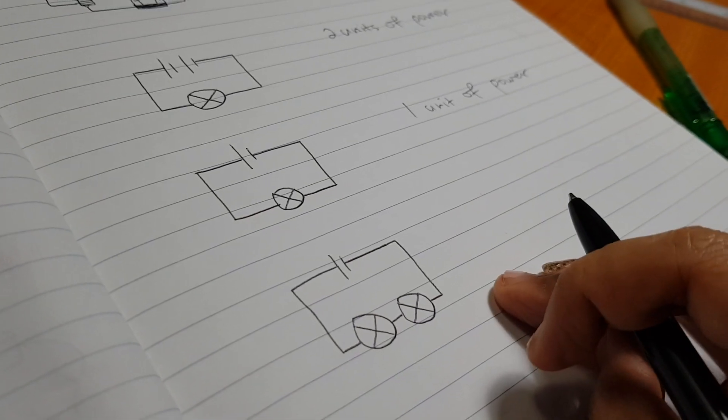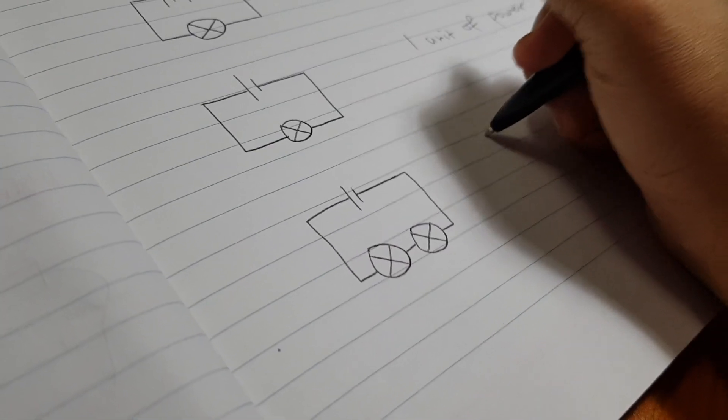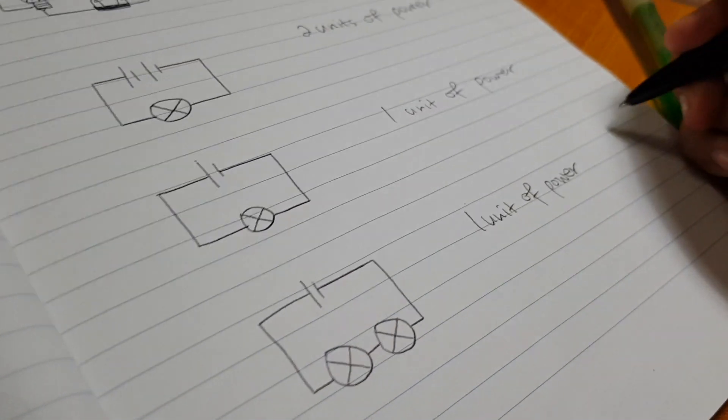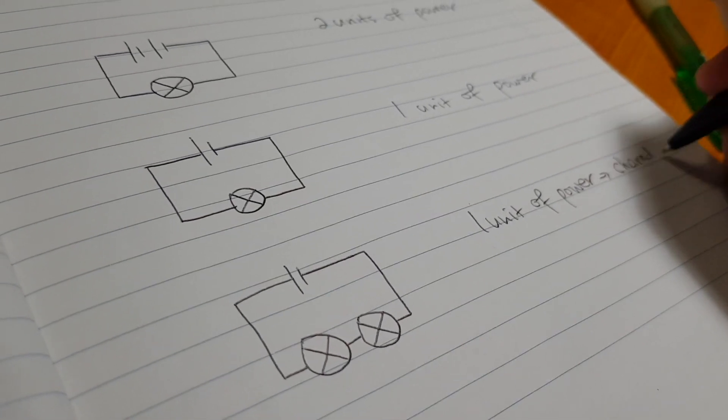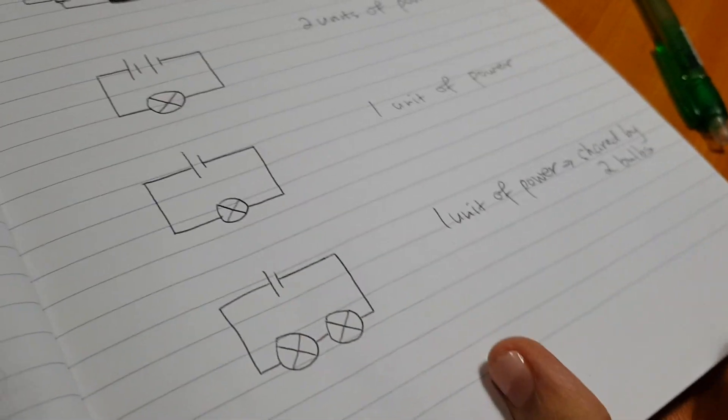And this one? You see, there are two bulbs right? So one unit of power, because one battery, is shared by two bulbs. Correct or not?